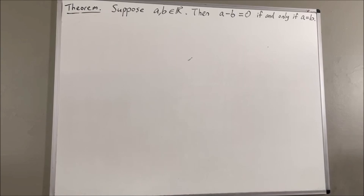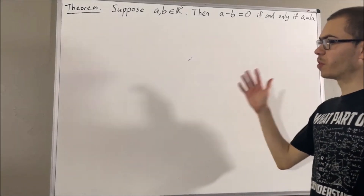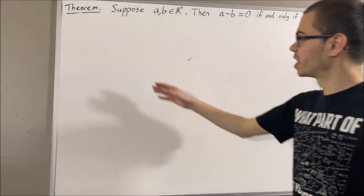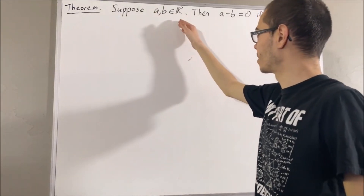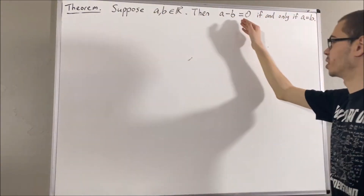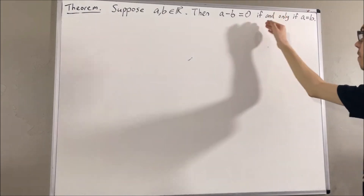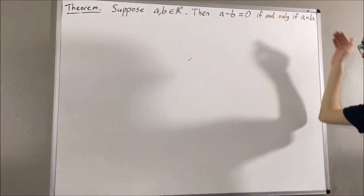Hello! In this video, we are going to prove the following theorem. Suppose a and b are real numbers. Then a minus b is equal to zero, if and only if a is equal to b.